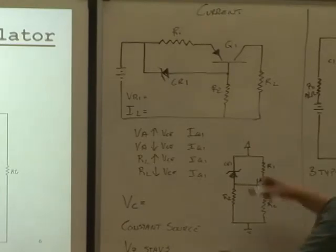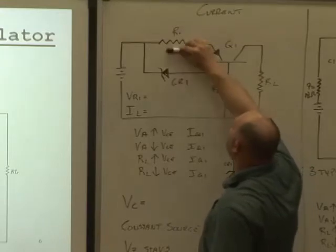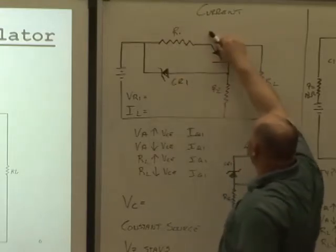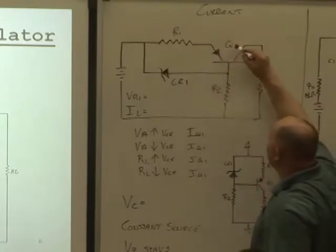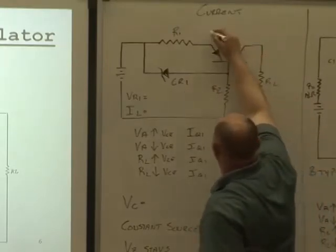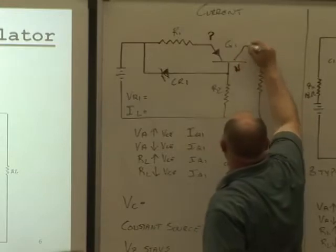But this time I've got the zener diode in parallel with R1 and I've got basically a rectangle here. R1, CR1 emitter base junction. This time what kind of transistor is it? PNP. PNP.